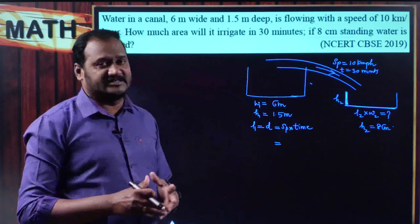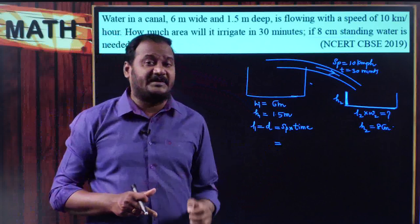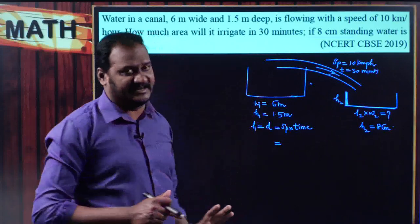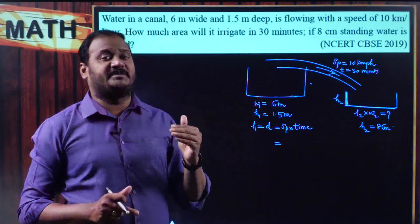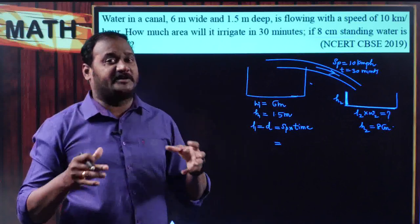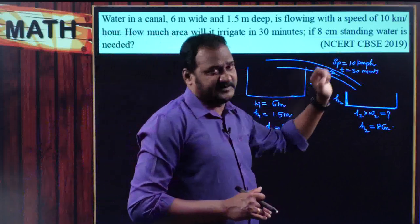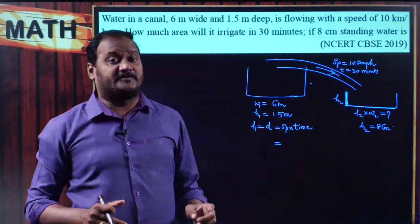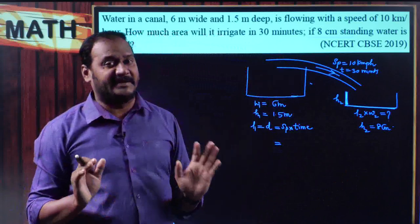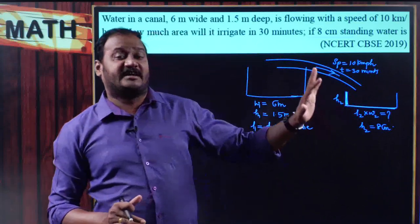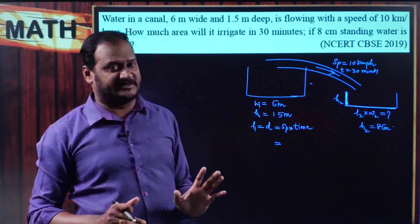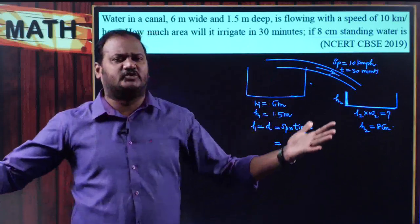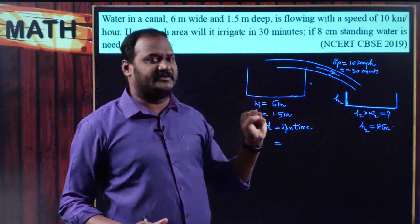Before answering this problem, ensure that everything is in the same units. Width and depth are in meters, speed is in kilometers per hour, time is in minutes, and standing water is in centimeters. The proper unit to use throughout is meters. So convert centimeters to meters and convert kilometers to meters to get consistent values.